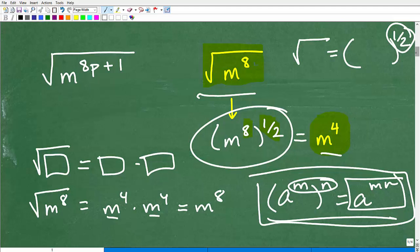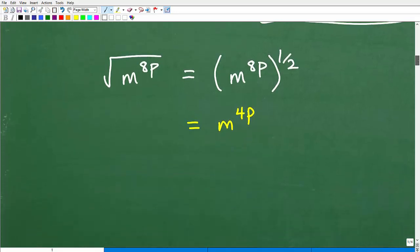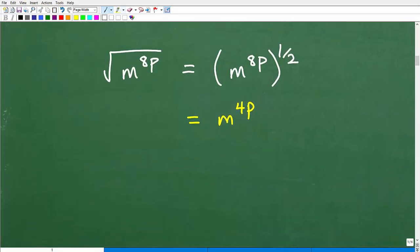All right, so let's go ahead and take it to the next level here. How about the square root of m to the 8p? Well, it's the same thing, so what we're going to do is express this, instead of a square root, as a rational exponent. We're going to think of this problem as m to the 8p to the one-half power, and then we're going to simply multiply one-half times 8p, and that gets us 4p. One-half times 8 is 4.